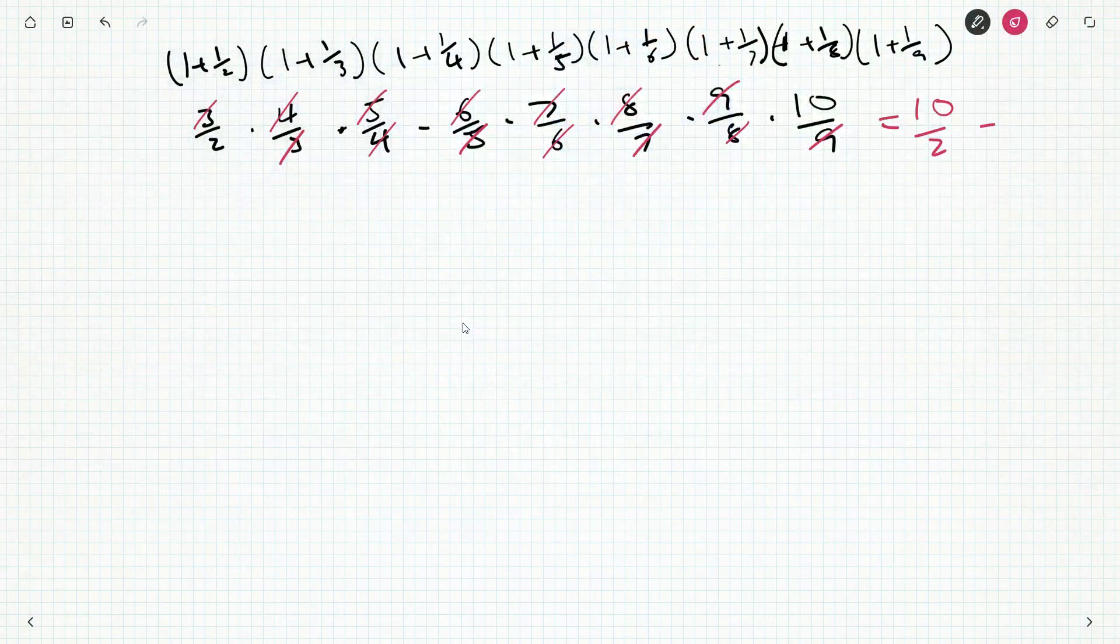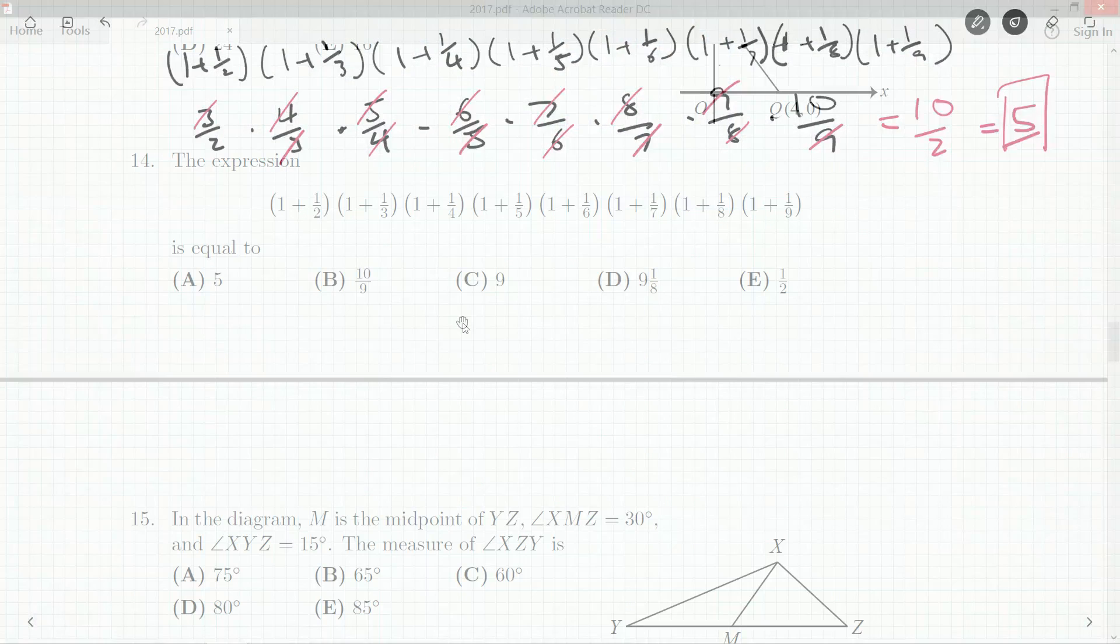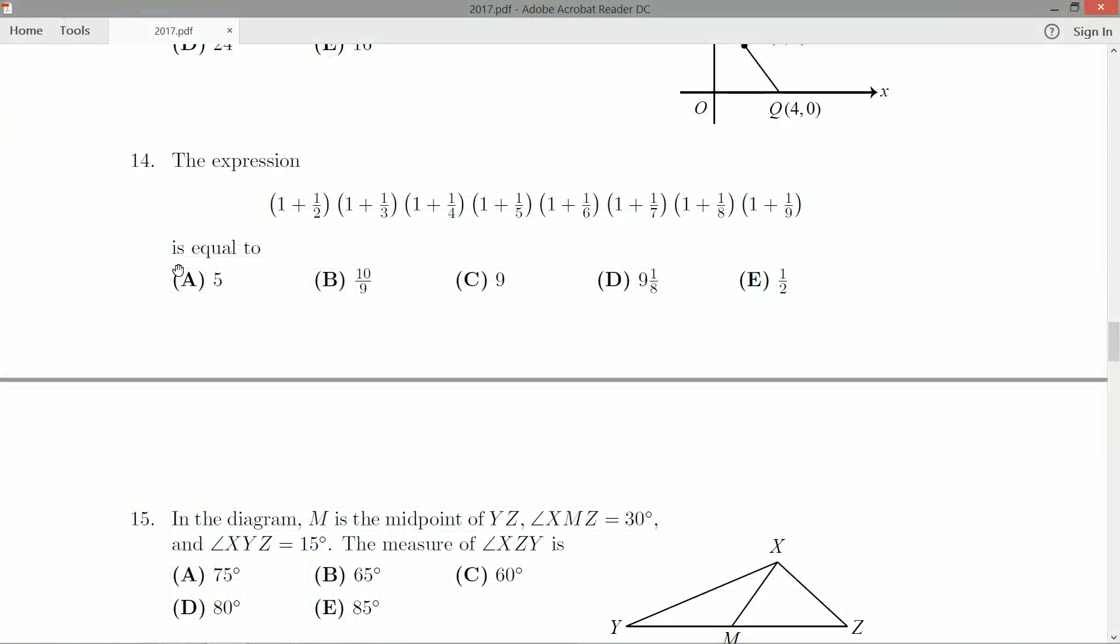Everything else cancels, but of course 10 over 2 is just 5. So we look, is 5 one of our possibilities? Sure it is, it's A.